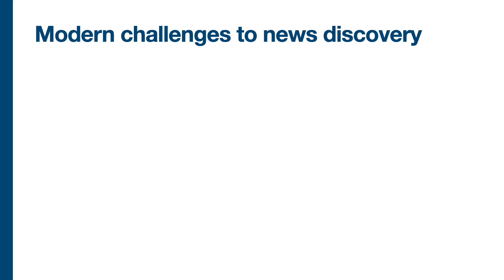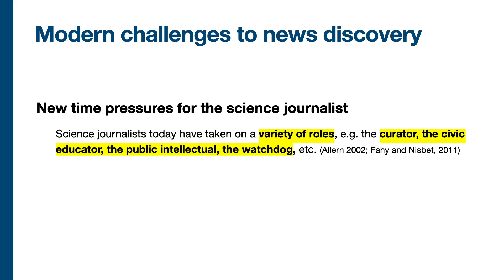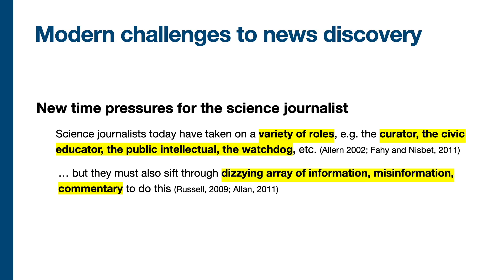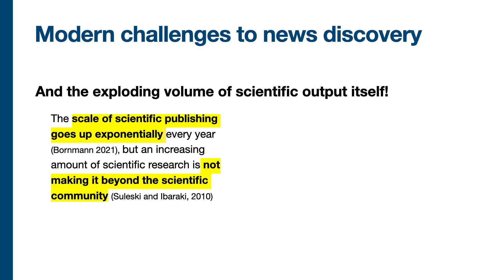Now I'll briefly summarize the modern challenges in news discovery that journalists face. For one, they encounter certain time pressures, because journalists today have taken on a variety of roles in society — they are curators, civic educators, public intellectuals, and so on. While this move towards more independent inquiry is a net positive for society, it also means that journalists are now sifting through a dizzying array of information. Moreover, the volume of scientific output itself has exploded over the last few years. Recent studies show that the number of scientific articles published annually increases exponentially. However, an increasing amount of scientific research is just not making it beyond the scientific community — it's not coming into the news.